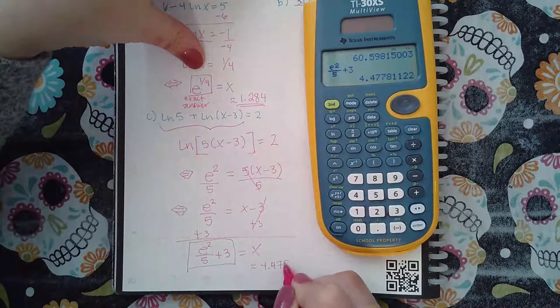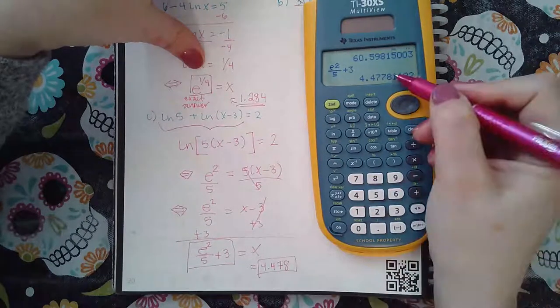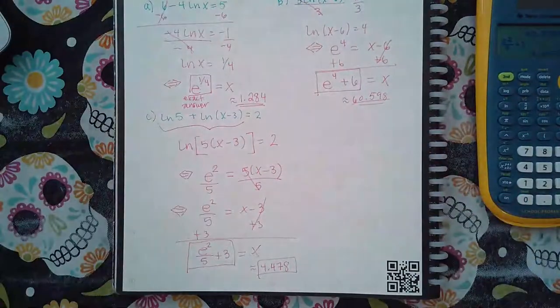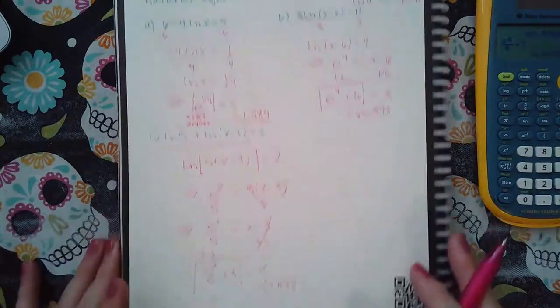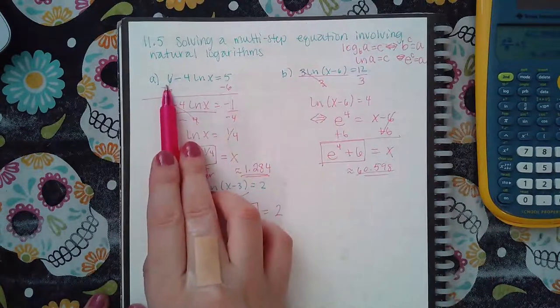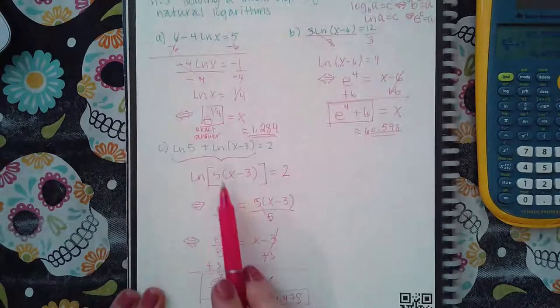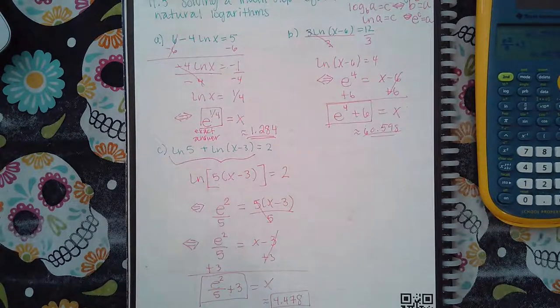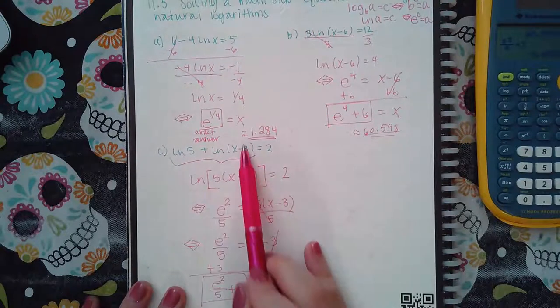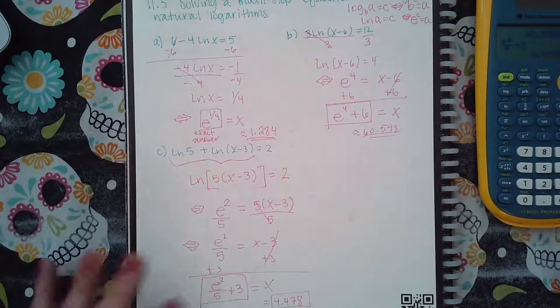And that's pretty much it. So you have examples of when there's just a coefficient in front, when there's a coefficient and an extra term, or when you have two ln's and you have to combine them into one. Now if that were a minus I would have put five over x minus three, just FYI.